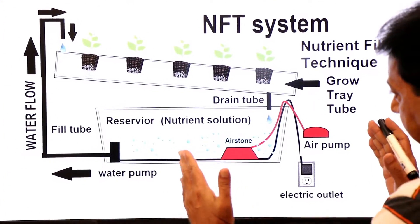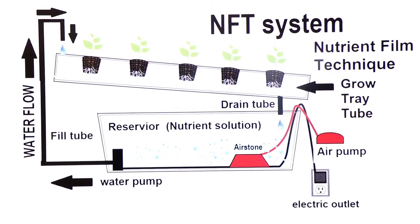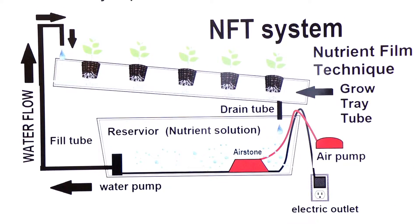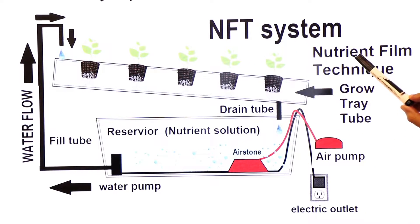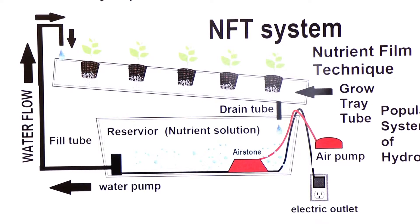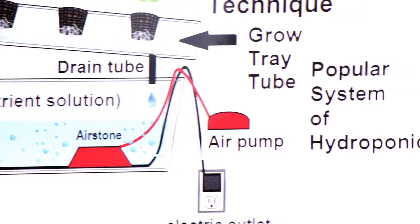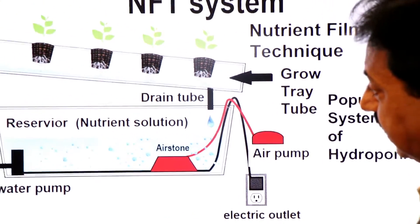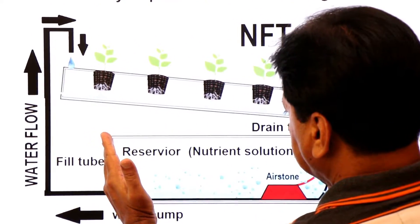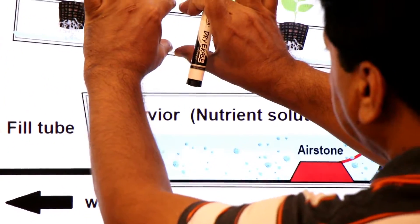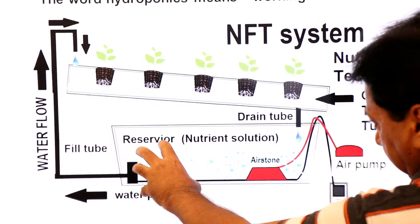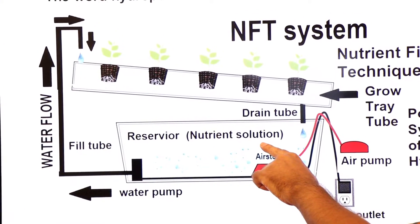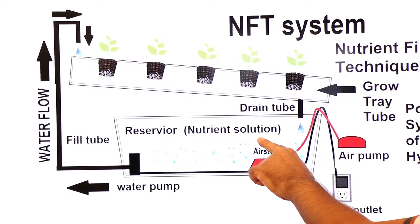These are the parts of the hydroponics kit. The most popular technique in hydroponics is called the NFT system — Nutrient Film Technique system. It is the most popular system of hydroponics. In this system, a reservoir is placed at the bottom and above it a grow tray for plants is placed.